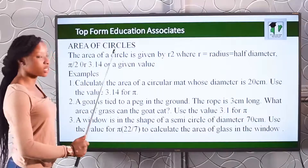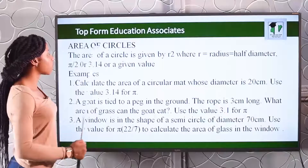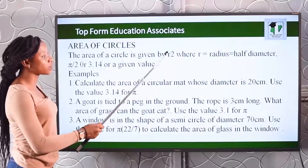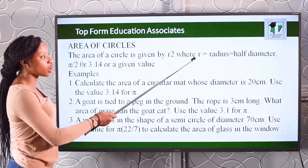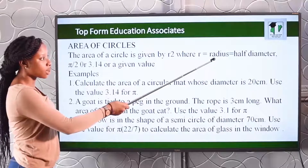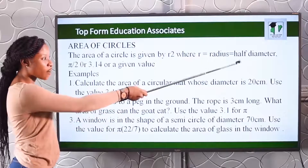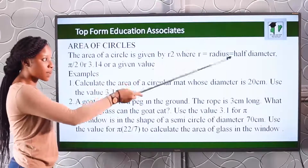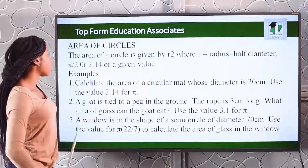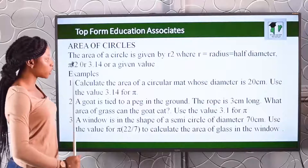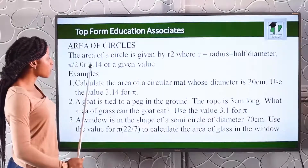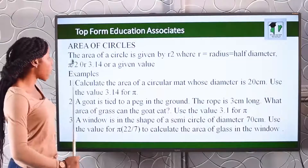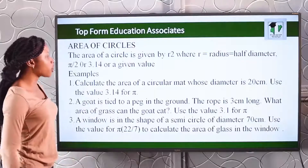Now we'll be moving to the area of circles. The area of a circle is given by πr², where R is the radius. Radius is half a diameter. Pi is approximately 3.14 — that is the given value for pi.